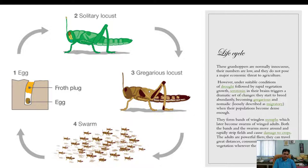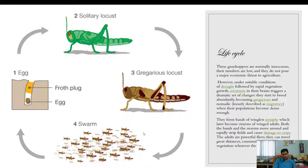The gregarious phase locusts form bands of wingless nymphs, which later become swarms of winged adults. Both the bands and the swarms move around and rapidly strip fields, causing damage to crops. The nymphal band and the swarming stage both cause damage to crops.